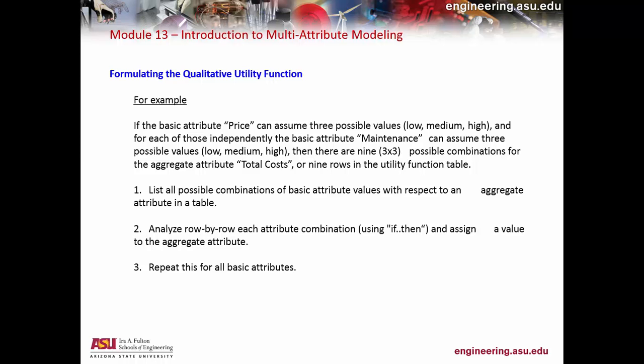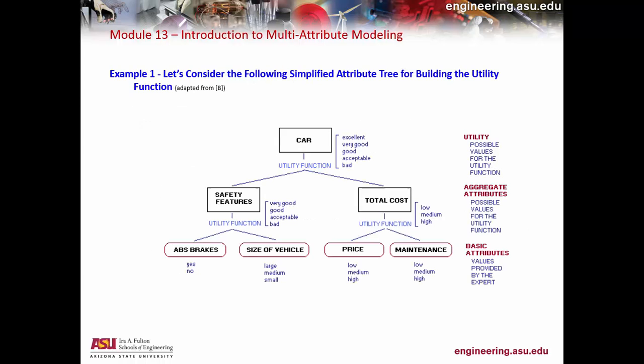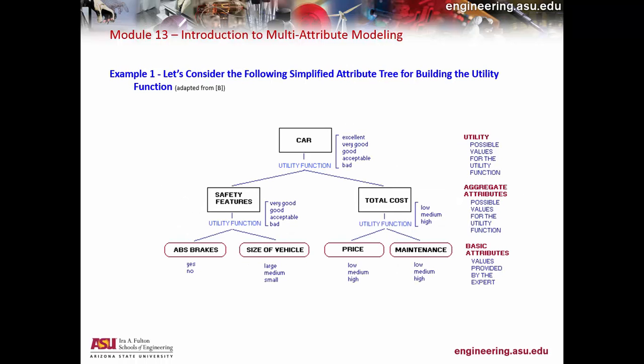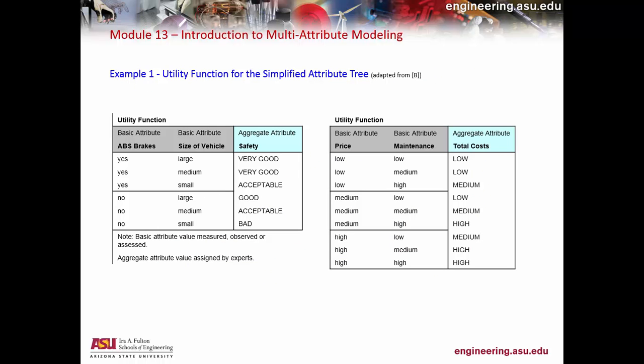You figure out whether you need to assign a value for each attribute. There's an overall table for the attribute tree, but a concrete example works better. If you look at ABS brakes and vehicle size, you can examine their combinations — for example, big vehicles need ABS brakes, but for a small vehicle, maybe not every vehicle needs ABS brakes.